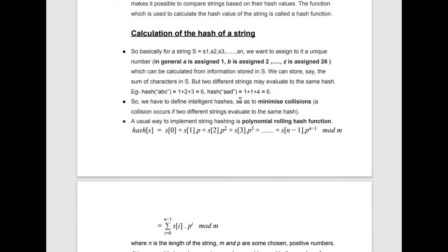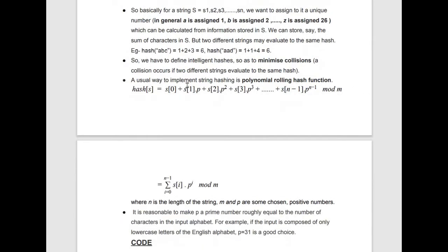Consider two strings 'abc' and 'aad'. The hash value of 'abc' using the sum hash function is 1 + 2 + 3 = 6. Similarly, 'aad' also has hash value 1 + 1 + 4 = 6. The two strings are different but their hash values are the same — this is known as collision. Collision occurs when two different strings evaluate to the same hash, and this is the central problem of string hashing.